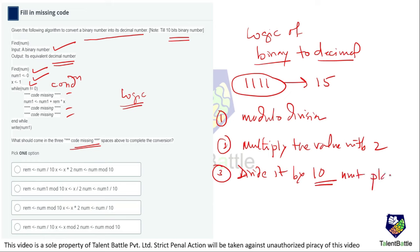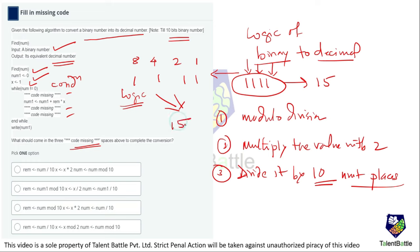We traverse from the first position to the second to the third and so on, using the trick of place values 1, 2, 4, 8. If all bits are 1 the decimal value is 15. So we take modulo division, multiply by 2, then divide by 10 to shift the digit position. Checking which option satisfies all three steps — the first option directly divides by 10, which won't give the correct result.